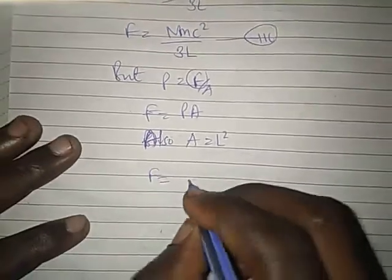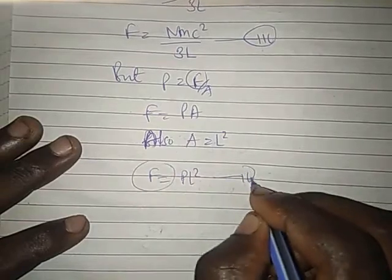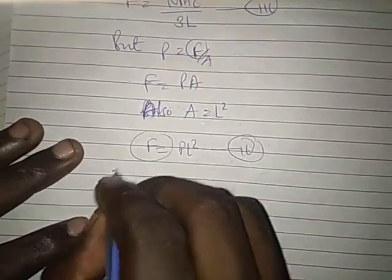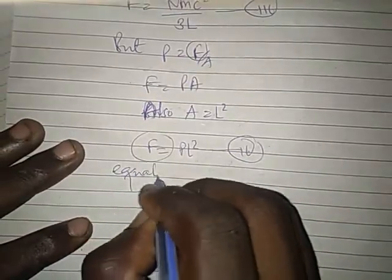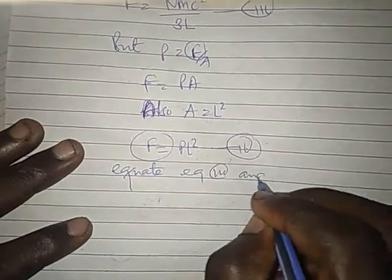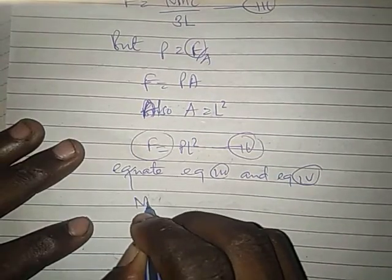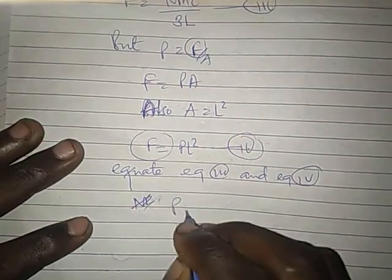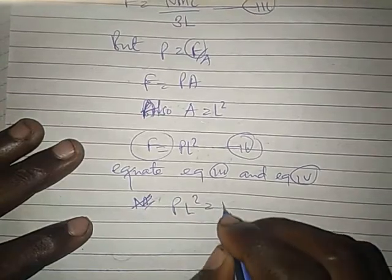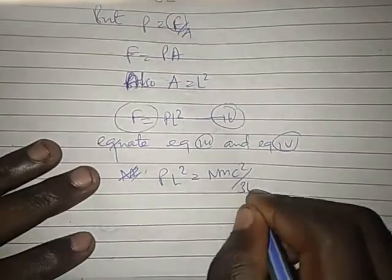We equate equation 3 and equation 4. We get PL squared equals NMC squared divided by 3L.